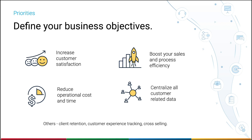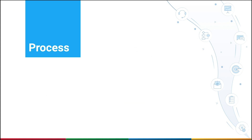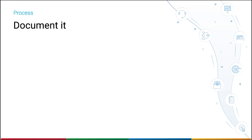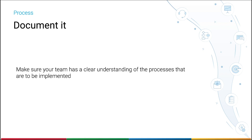The next aspect is Process. Business processes are designed to streamline the way your business runs and your teams work. Understanding them will further facilitate implementation. First, document it — chart out the elements in the business processes and make sure your team has a clear understanding of the processes that will be implemented in the Zoho CRM account.